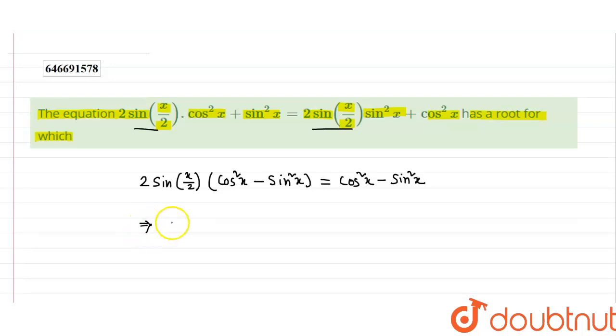This can be written as 2 sin(x/2) minus 1 times cos 2x equals 0.